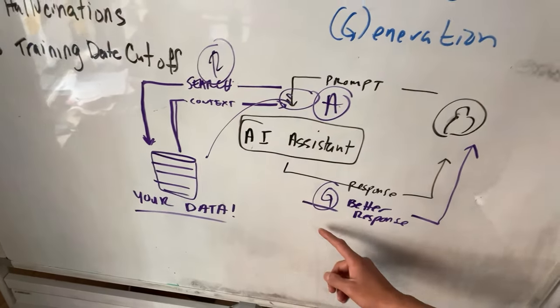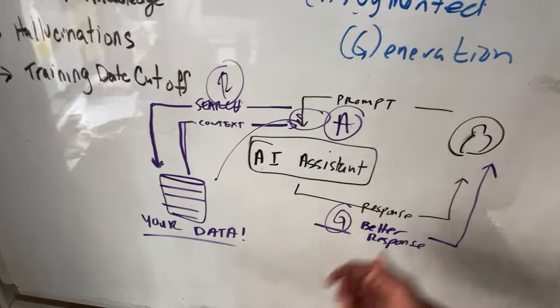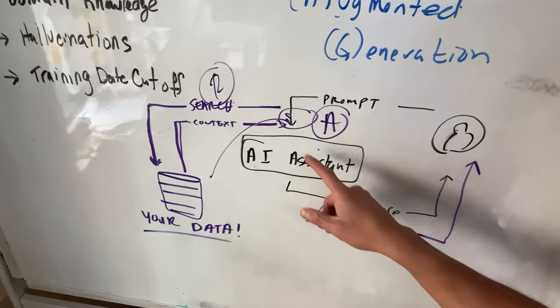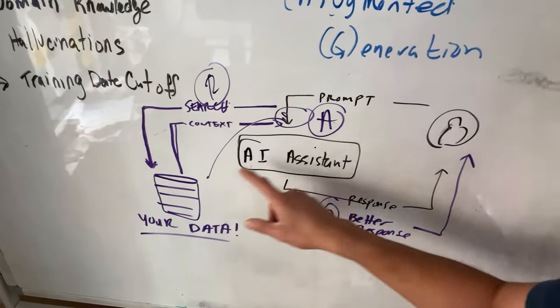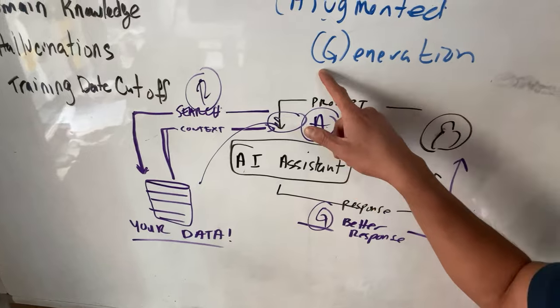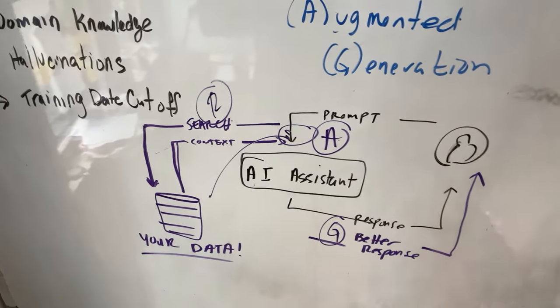And then everything else proceeds the same way. The AI assistant will process that and generate typically a better response for you as a user. So the retrieval here is this retrieval function where we're grabbing the information. The augmented part here is we're augmenting that to the original prompt, and the generation here is that we're generating the same prompt from the LLM.